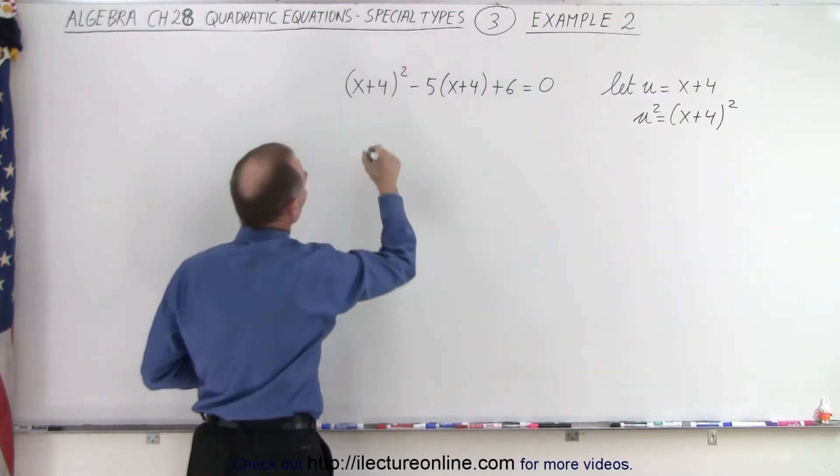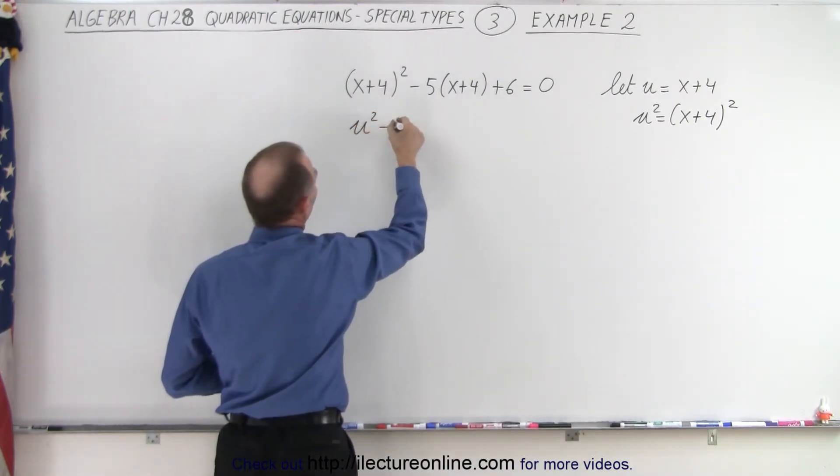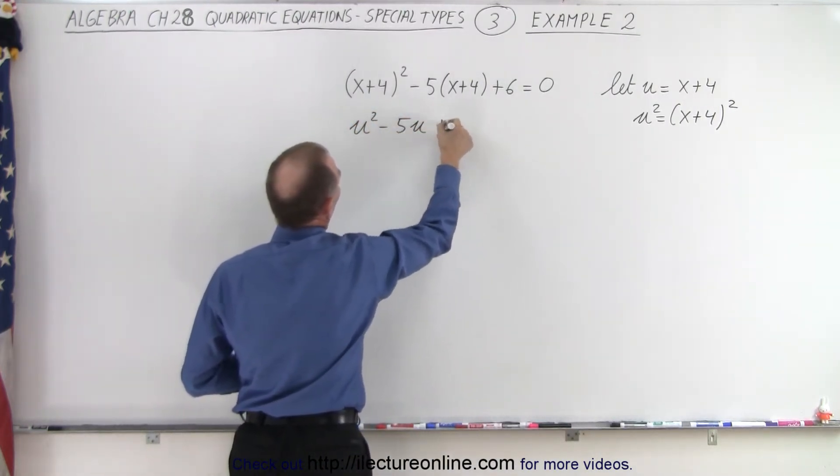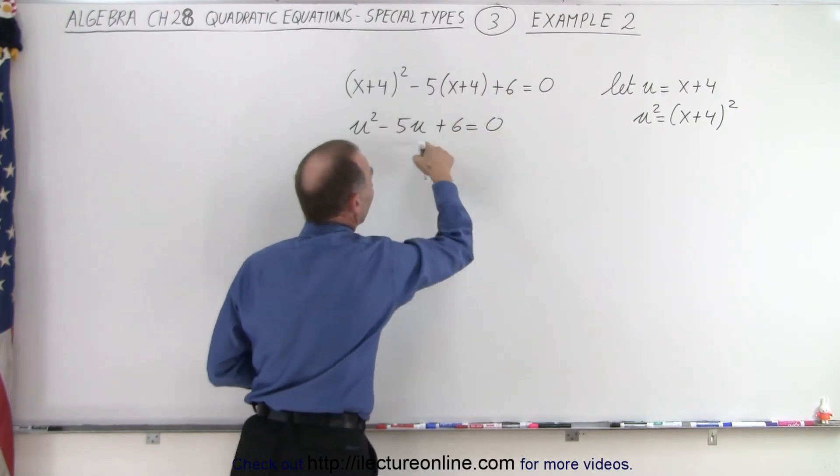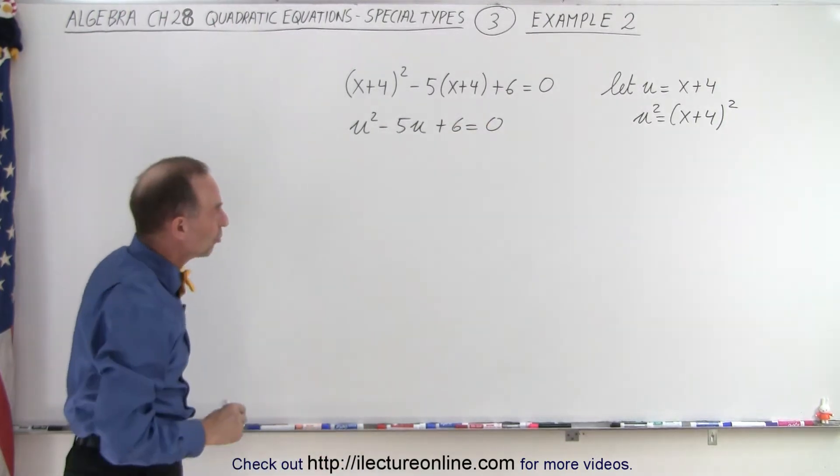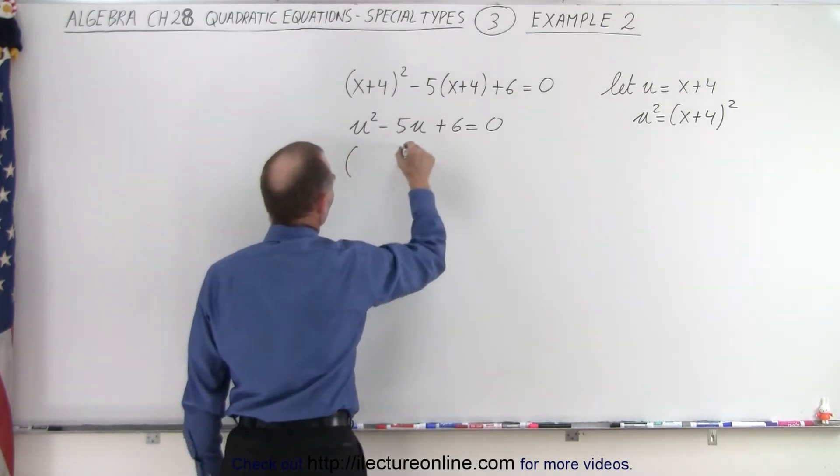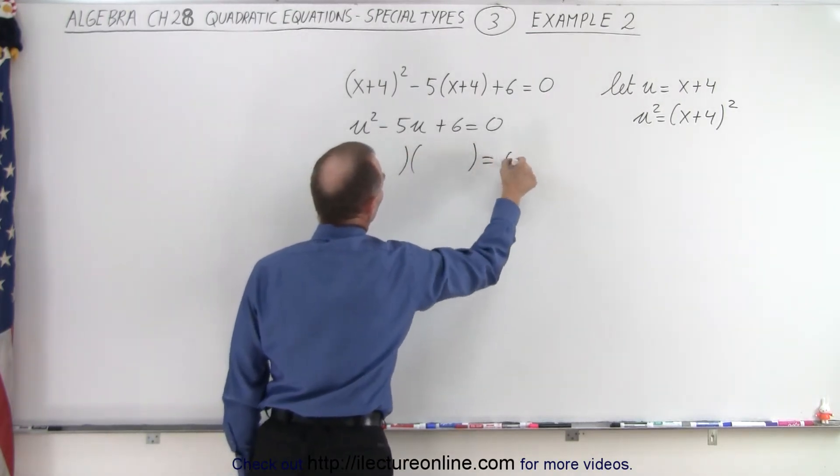We'll substitute that into our equation. So this becomes u squared minus 5 times u plus 6 equals 0. And now we can solve that equation. We could probably again factor this. So let's try that.